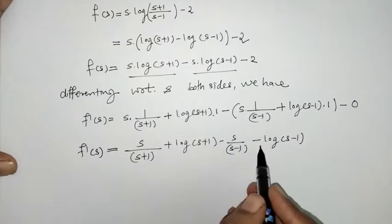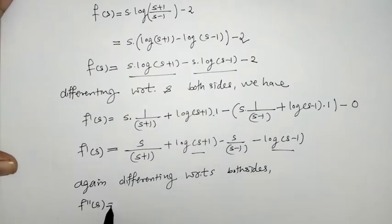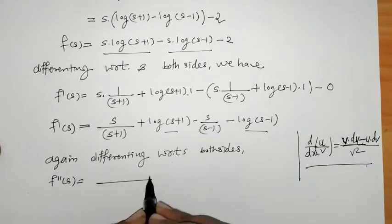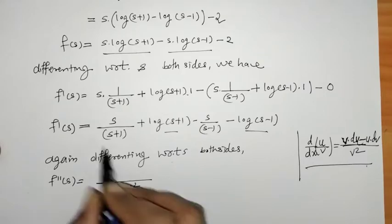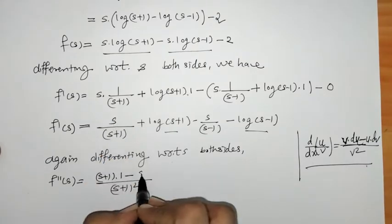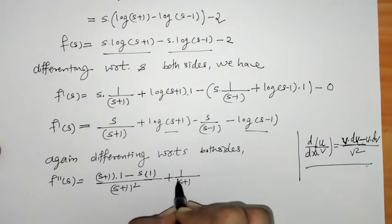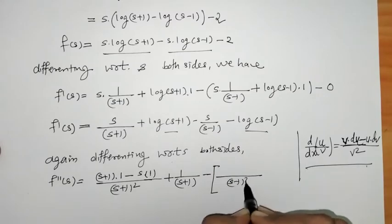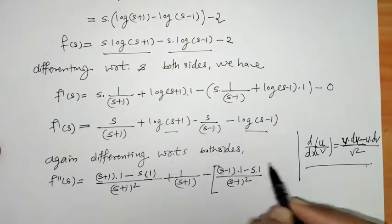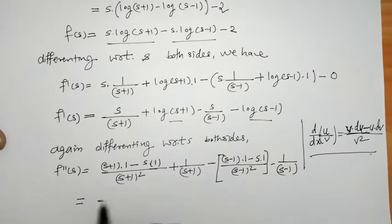Now we can check that we still have log functions here, so we have to differentiate again. We have to apply the quotient rule. By the quotient rule: (s+1)·(derivative of s) minus s·(derivative of 1), and the log derivative gives 1/(s+1).